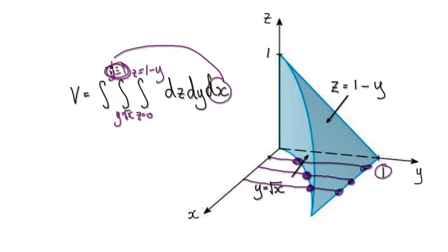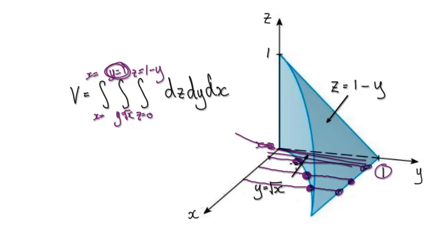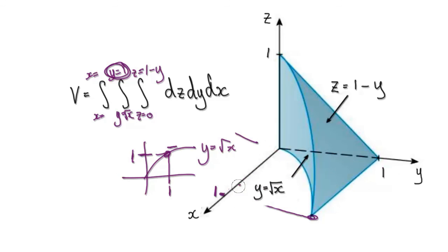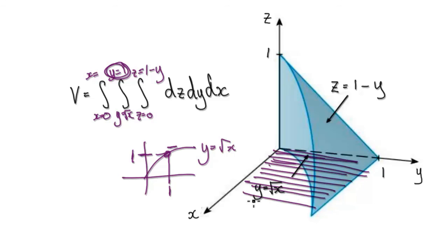Now for dx — x equals something. I'm scanning through from x equals 0. If y equals square root of x has a maximum height of 1, then x must go up to 1 as well. So I'm scanning from x equals 0 to x equals 1. The volume is given by that integral setup.